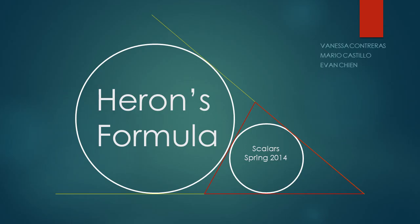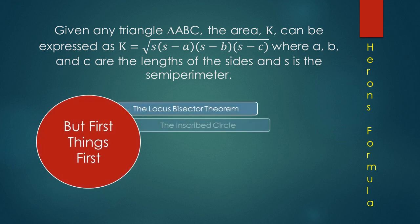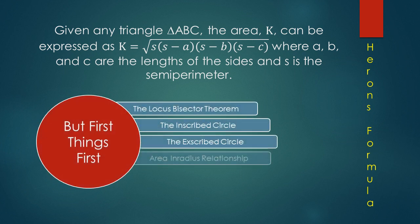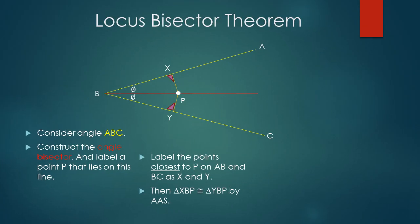Hello and welcome to this presentation. Today we will be discussing a geometric view of Heron's formula. We begin with what I like to call the locus bisector theorem. We first start with some angle ABC, then construct the angle bisector from B, which by definition cuts the angle B in half.